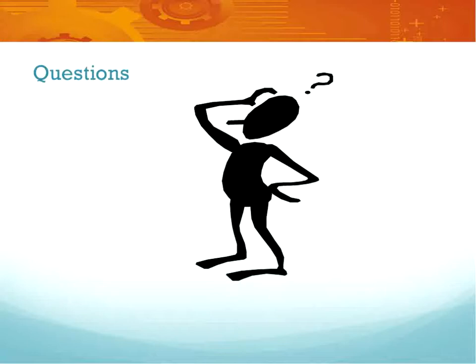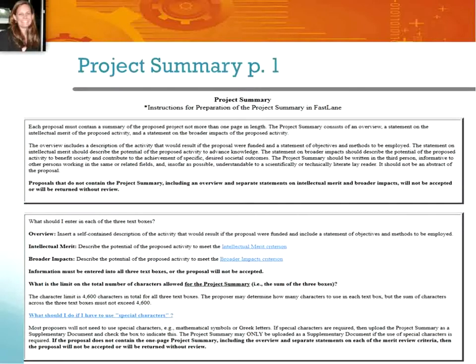Charlotte will now pass along to Ellen Haas, who will share more information about forms as they relate to specific proposal components. I wanted to start by talking a little bit about the project summary. This is what you will see when you go into Fastlane in terms of instructions for preparation of the project summary. This is essentially your one-pager — a summary of the project. It includes an overview and, most importantly, a statement on intellectual merit and a statement on broader impacts.